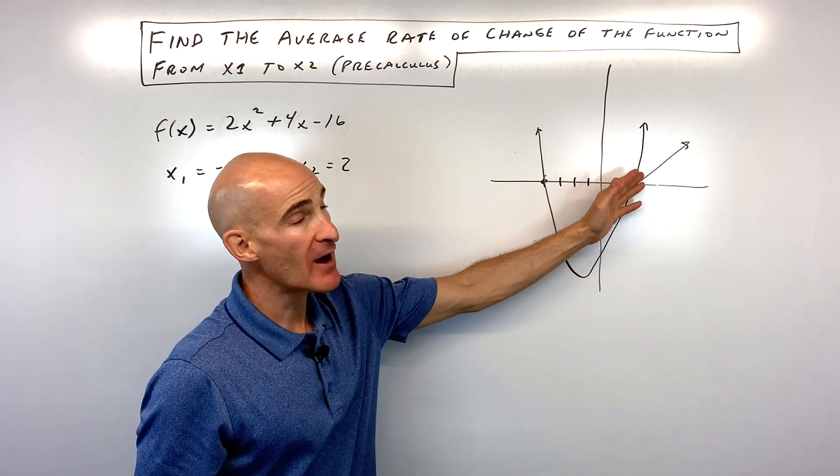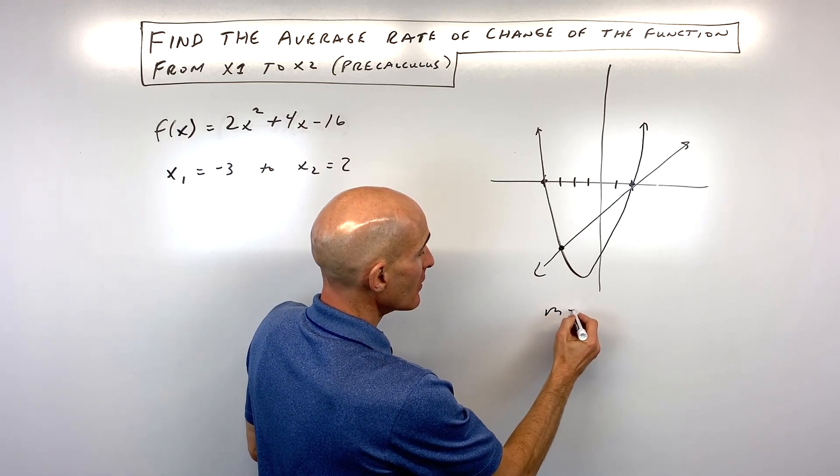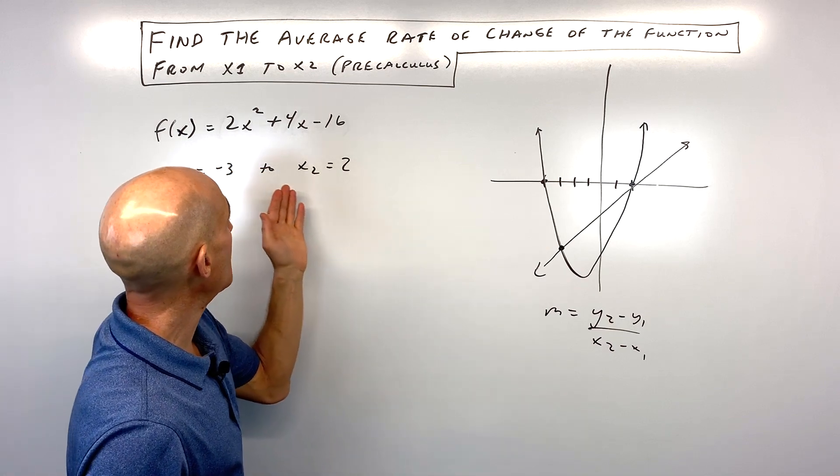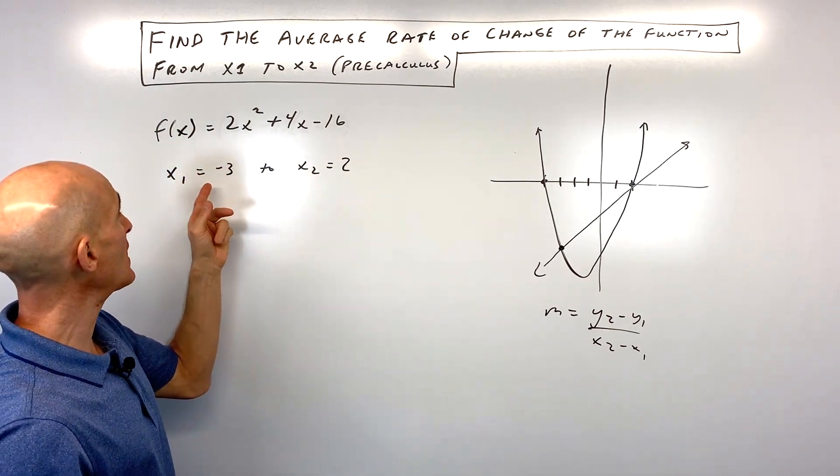What we need to do to find the slope—which remember is this formula here: y₂ - y₁ over x₂ - x₁—we need to find the y values. So let's go ahead and put -3 in and 2 in and see what those y values are.